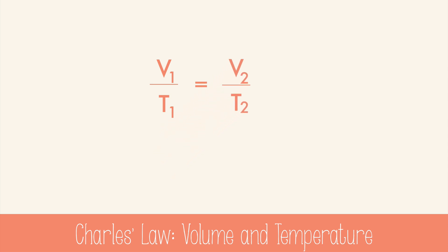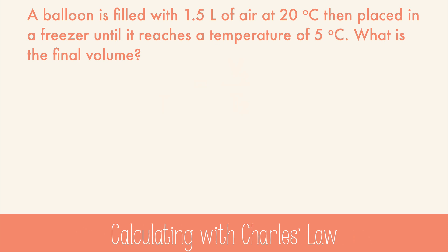V1 over T1 equals V2 over T2. Here's a problem. A balloon is filled with 1.5 liters of air at 20 degrees Celsius, then placed in a freezer until it reaches a temperature of 5 degrees Celsius. What is the final volume? Well, let's rearrange Charles' law to find V2. Then we can plug in our data, after we convert Celsius to Kelvin, of course. And you get 1.4 liters. Which makes sense because volume and temperature are directly related.